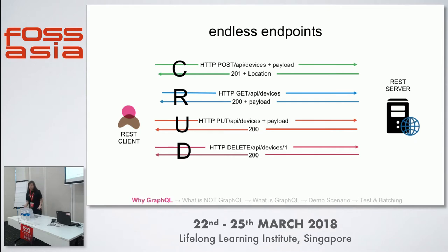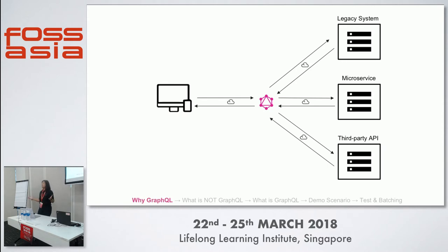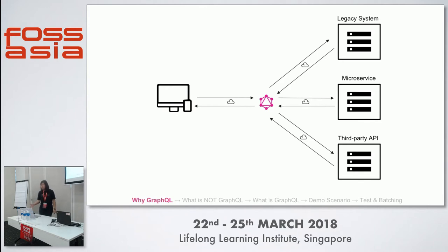What GraphQL does is that instead of having multiple endpoints in your application, it solves this with one single endpoint. The beauty of this single endpoint is that you can communicate with different types of databases, even legacy systems and microservices. Your front-end just calls this one single endpoint, passes the request you want, and gets the response back. I'll show you how it actually looks like.